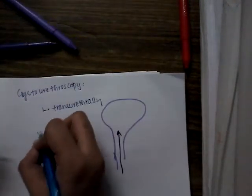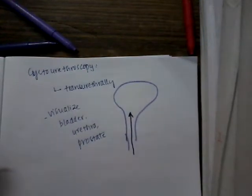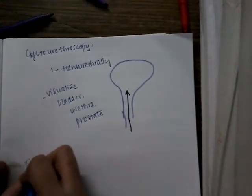Finally you can do cystourethroscopy. It is done basically transurethrally - through the urethra we pass this cystourethroscopy and we can visualize the bladder, urethra, and also the prostate. All the carcinoma or other conditions can be visualized through this.